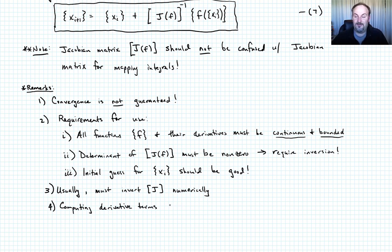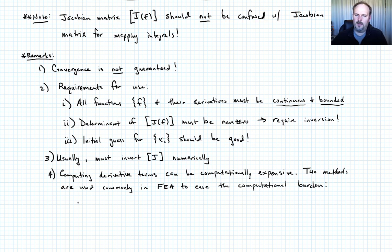And the fourth and final comment that I want to make is that the computing of the derivative terms can be computationally expensive, as can inverting that matrix if it gets large. So if you think of this as a system of FEA equations, then the Jacobian matrix is going to be the same size as your stiffness matrix. So that could be a substantial challenge to invert if you have to do it a lot of times. So it can be computationally expensive. We oftentimes want to try to use some methods to reduce the computational burden. So there's two that are most commonly used in FEA. Two methods are commonly used to ease the computational burden.